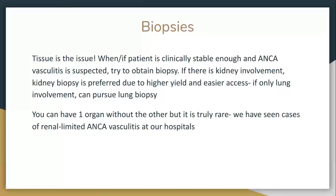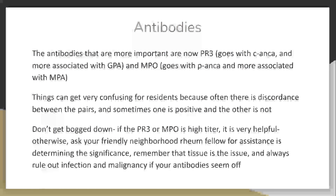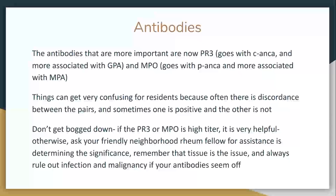Biopsy — we've talked about this. Tissue is the issue. When the patient is clinically stable enough and you suspect ANCA vasculitis, biopsy the kidney preferably because that's higher yield. You can have one organ without the other — pulmonary-renal syndrome is what we're talking about here. You can have one or the other or both. We have a patient at the VA who has renal-limited vasculitis being treated by nephrology. PR3 is the one that goes with C-ANCA and is more associated with Wegener's, and MPO goes with P-ANCA and is more associated with MPA.